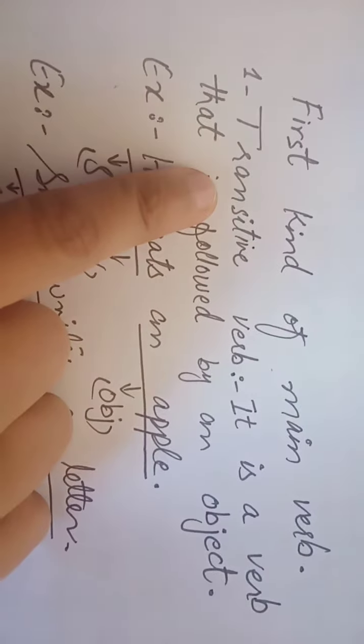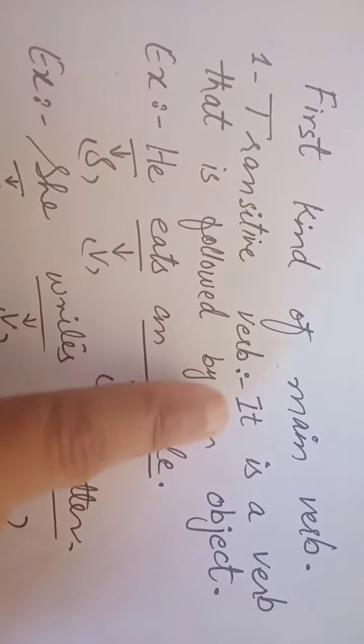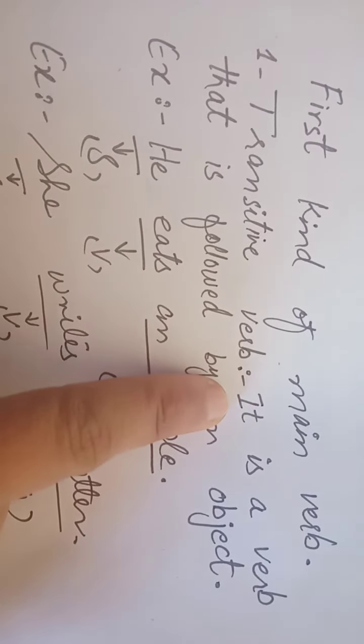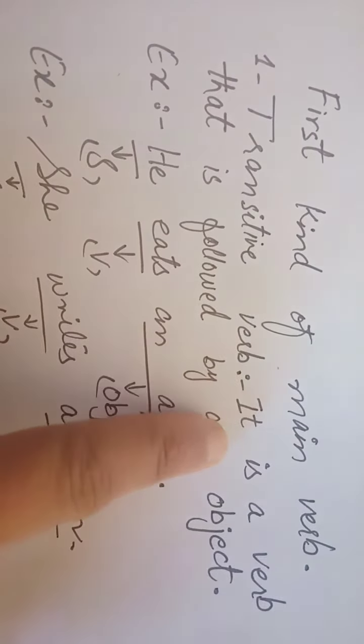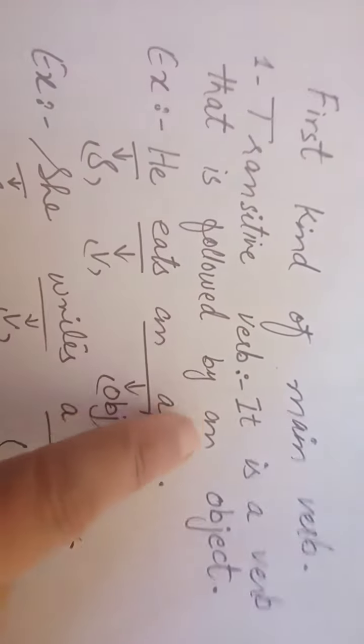First one kind of main verb is transitive verb. What is transitive verb? Definition is you can see in the video. It is a verb that is followed by an object.